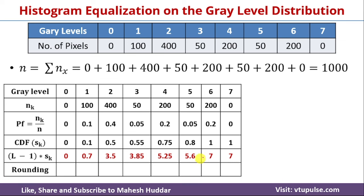After performing this calculation, we need to round off these values to get the new levels for each pixel. Rounding 0 gives 0. 0.7 is rounded to 1. 3.5 is rounded to 4. 3.85 is also rounded to 4 since it is near to 4. 5.25 is rounded to 5 since 0.25 is less than 0.5. 5.6 is rounded to 6. 7 remains 7. So the new levels are 0, 1, 4, 5, 6, and 7.